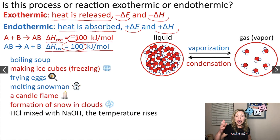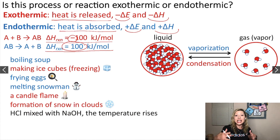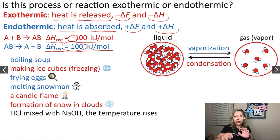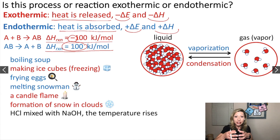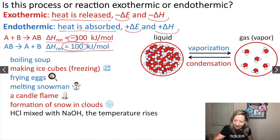How about hydrochloric acid mixed with sodium hydroxide, and then the temperature rises? You just mix the two things together, hold on to your beaker and it becomes hot. Heat got released from your reaction into the surroundings. So this is going to be an exothermic process.